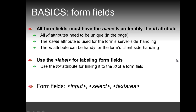Before we actually code the first example, it's important to mention that all form fields must have the name attribute and preferably the ID attribute. All ID attributes need to be unique in the page. The name attribute is important because it is used for the form's server-side handling, and the ID attribute is handy for the form's client-side handling. For labeling form fields you need to use the label tag — when we speak of form fields we mean the input tag, the select tag, and textarea.